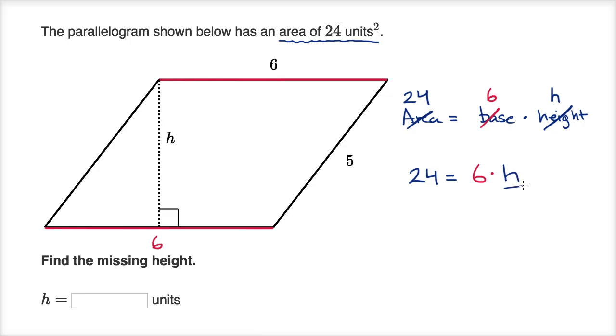So six times what is equal to 24? Well, six times four is equal to 24. So we know that h is going to be equal to four units.